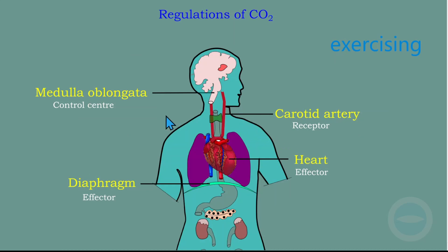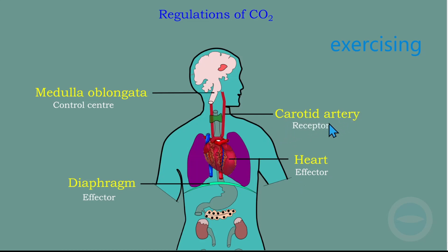These are the parts that take action to control the carbon dioxide levels in the blood. We have the carotid artery, which is the receptor; the medulla oblongata, which is the control center; and the diaphragm and heart, which are the effectors. The carotid artery is a blood vessel that takes oxygenated blood from the heart to the brain. They are found on each side of the neck, so we have two carotid arteries. Inside the carotid artery there is a chemoreceptor.